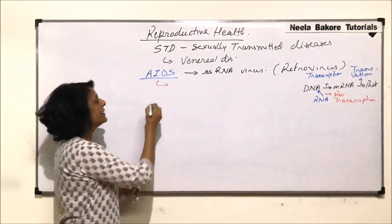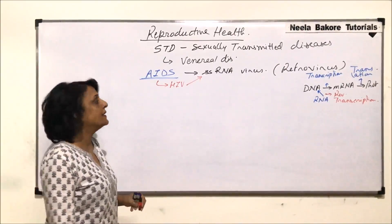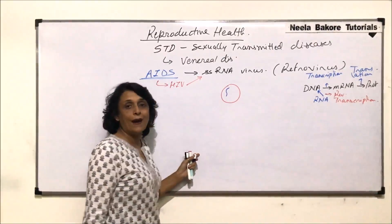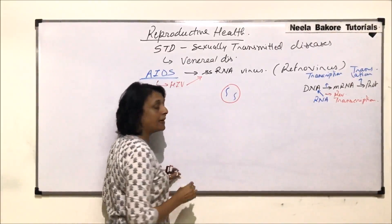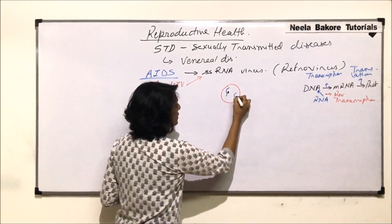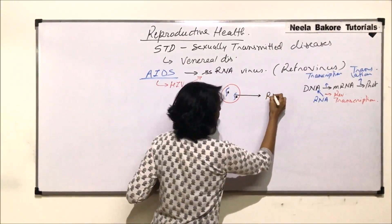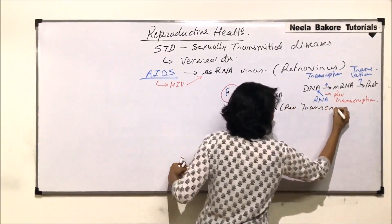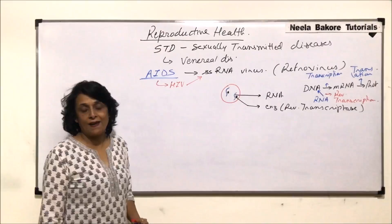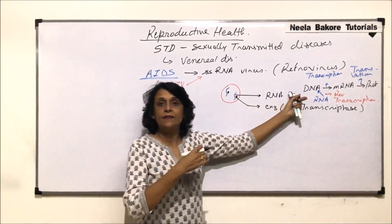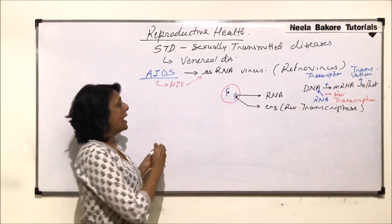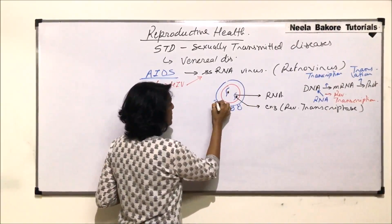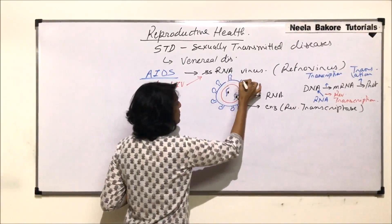In the case of the AIDS-causing virus, that is HIV, which is a single-stranded RNA virus, if we draw the structure: this is the protein capsid. Inside the protein capsid is the single-stranded RNA — there are two separate single-stranded RNAs. Along with this RNA, there is the reverse transcriptase enzyme. This is found in all retroviruses because DNA has to be synthesized first before the central dogma can take place. Outside this protein capsid, there is one more layer, and this layer has special glycoproteins known as GP120.